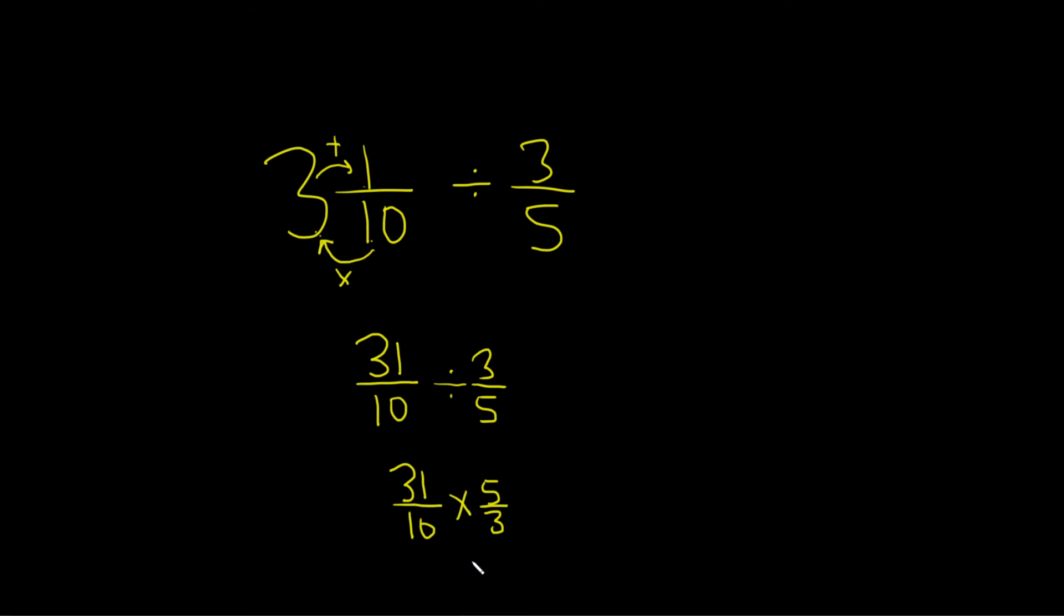And now we can look for cancellation. So the 3 and the 31, nothing happens there. But the 5 and the 10 can be simplified. 5 goes into 5 one time, and it goes into 10 two times.